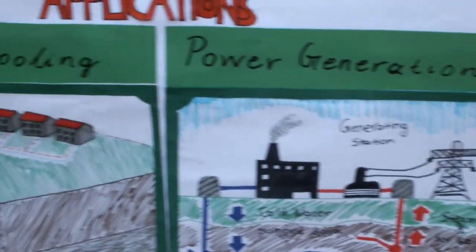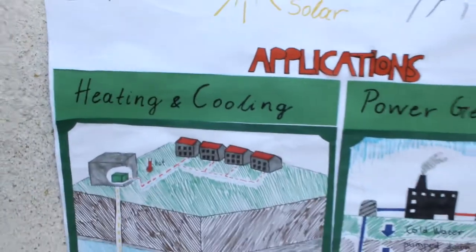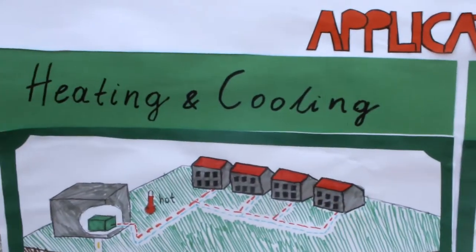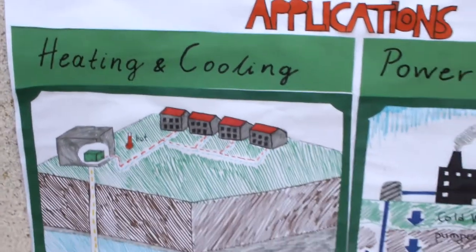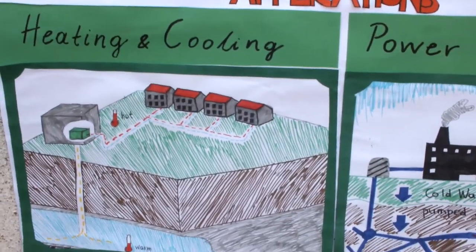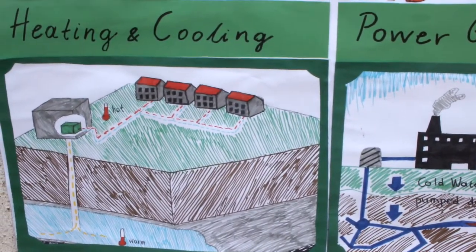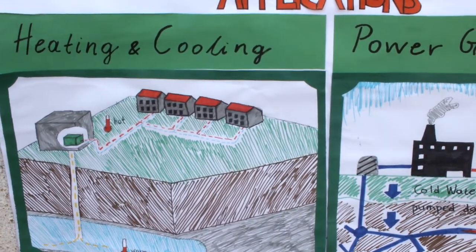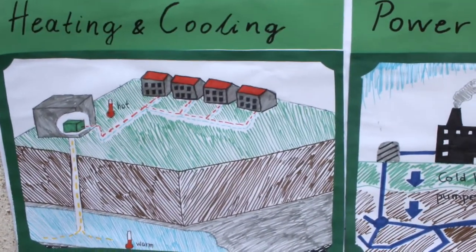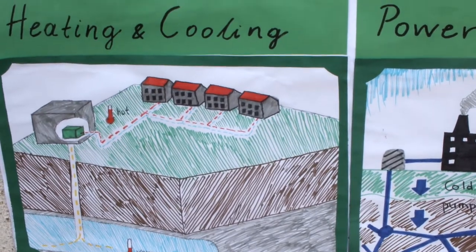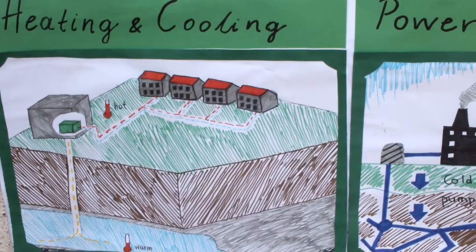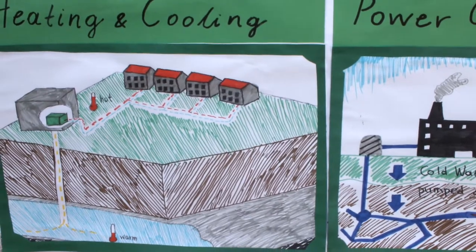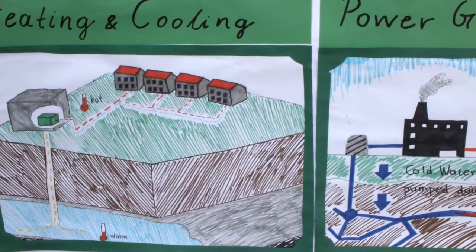Another application is geothermal heating and cooling. This mostly works by circulating water in a closed system through a loop field, installed horizontally or vertically in the ground, or even beneath a building. Heat is taken from the building and transferred to the ground in the summer, and the system is also reversible. During the winter, heat is taken from the ground and used in the building.